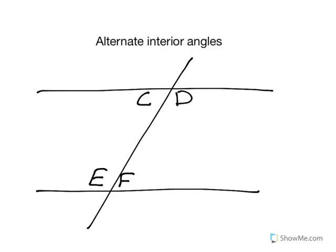C and F, and D and E, are alternate interior angles. This means that angle C is congruent to angle F, and angle D is congruent to angle E.